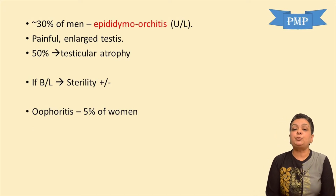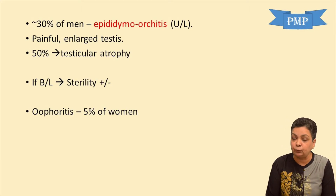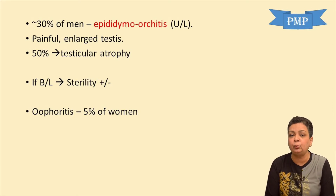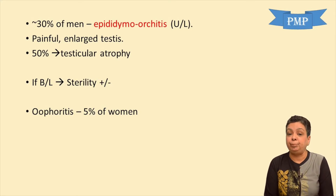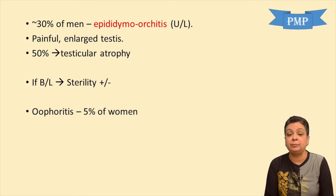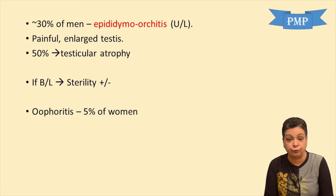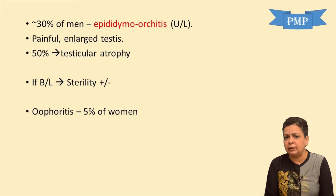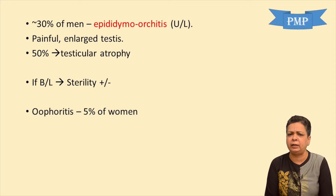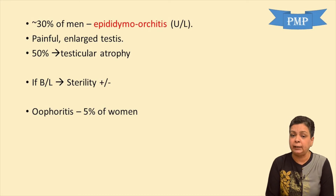30% of post-pubertal men who develop mumps also develop epididymo-orchitis, which is generally unilateral. Epididymo-orchitis occurs in 30% of post-pubertal males and is associated with painful enlargement of the testes. In 50% of involved individuals, the testes may undergo atrophy. Rarely, bilateral involvement may lead to testicular atrophy and then sterility, but sterility is a very rare complication of epididymo-orchitis.